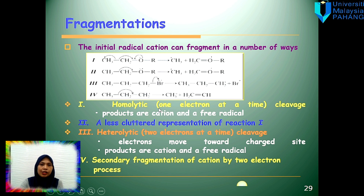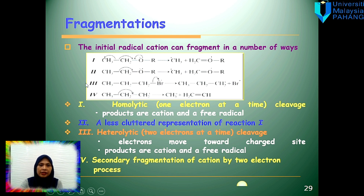Homolytic means one electron transfer at a time. You can see the arrow here is a half arrow, meaning only one electron has been transferred. One electron is transferred from the bond in the middle, and one electron from this bond is transferred to the CH3, and this CH3 is released as a radical. This part becomes the cation. This process involving the transfer of one electron is called homolytic.